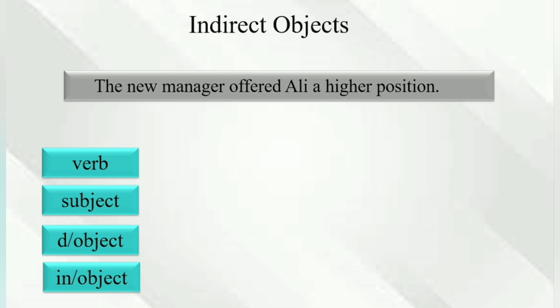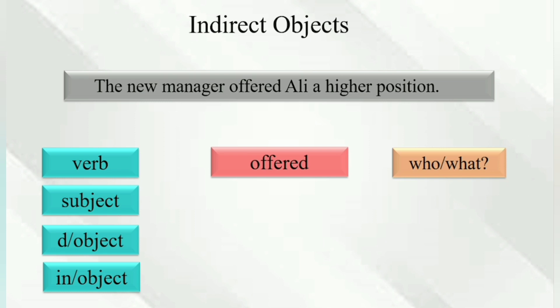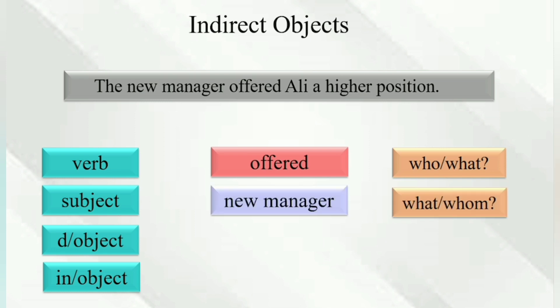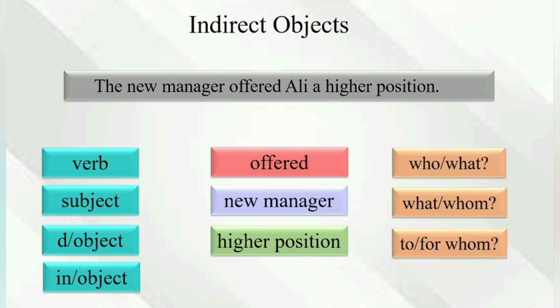'The new manager offered Ali a higher position.' Offered — who offered? The new manager. The new manager offered what? A higher position. To whom? Ali. So 'Ali' is the indirect object.